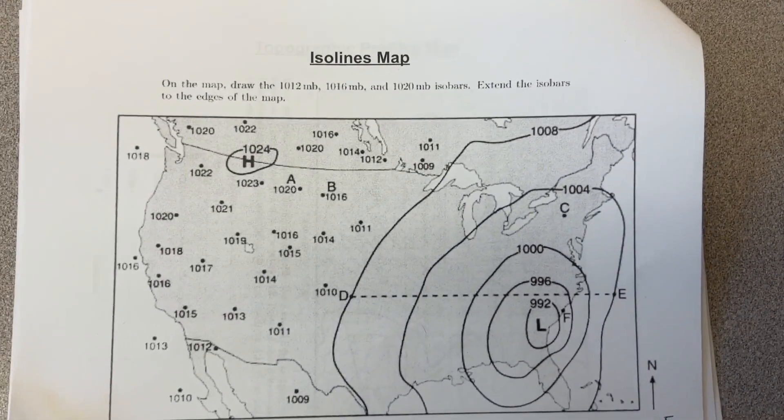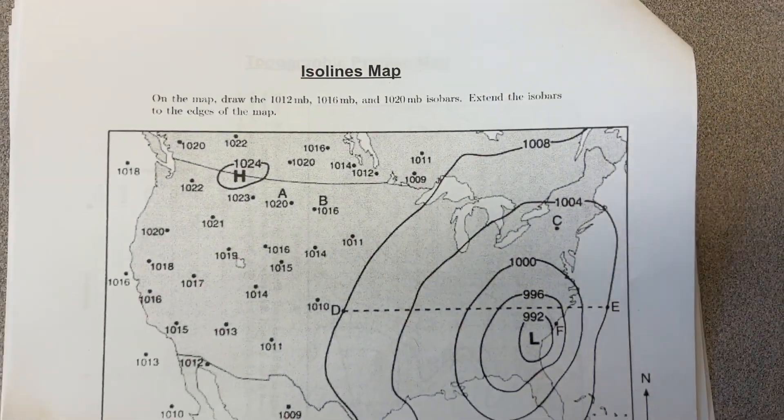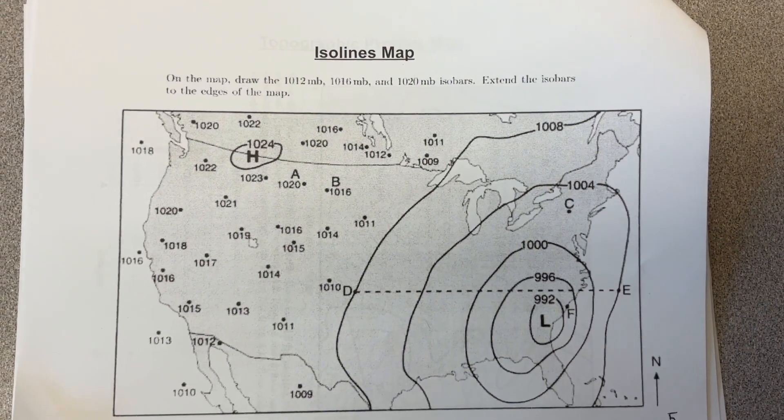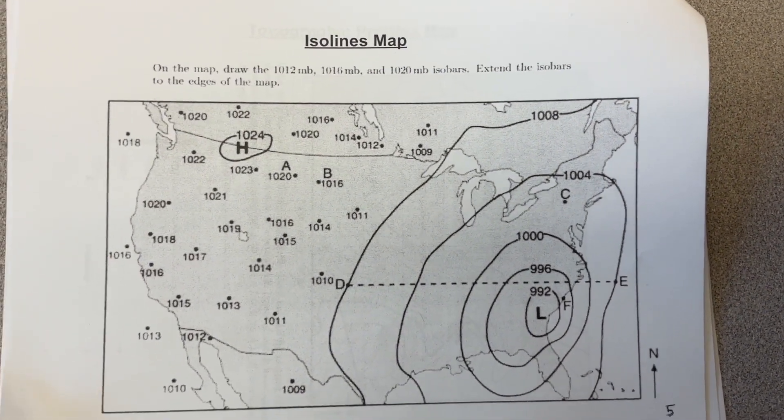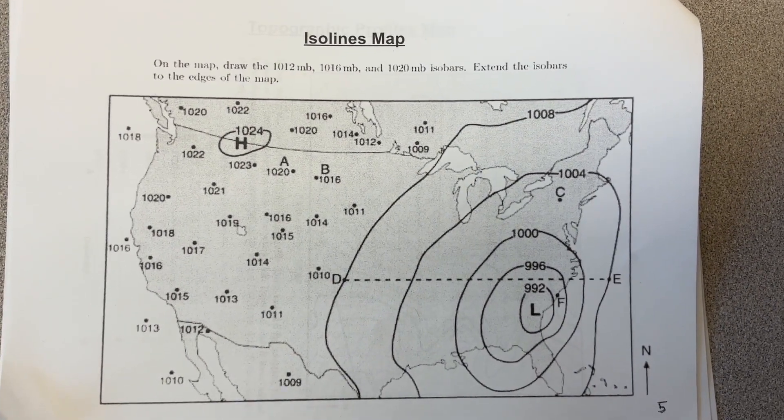Okay class, so today we're doing the isobars map. On the map, draw the 1012 MB, 1016 MB, and 1020 MB isobars. Extend the isobars to the edge of the map.